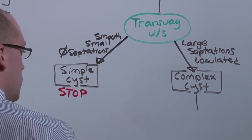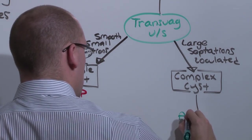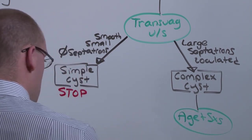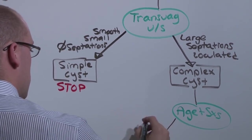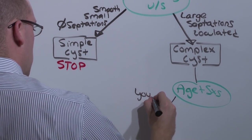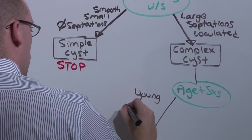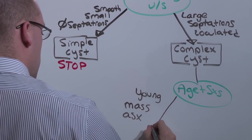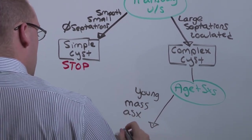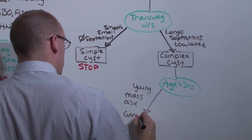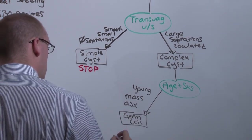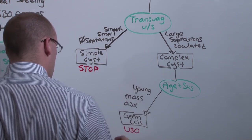You can generally determine from their age and their symptoms what type of tumor it's going to be. If it is in a young girl, a teenager, with an asymptomatic mass, you're probably going to have a germ cell tumor. Germ cell tumors need to be treated conservatively with unilateral salpingo-oophorectomy. Leave her ability to have kids and to complete puberty.